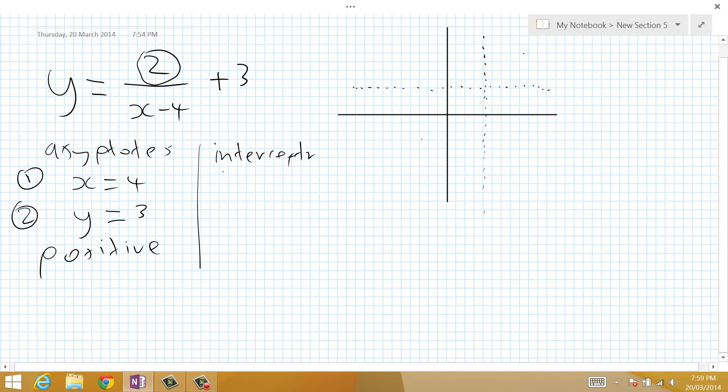When we set x equal to 0, we end up with y equals 2 over negative 4 plus 3. y equals negative 1 half plus 3. y equals 2 and a half. So it's going to go through our y-axis roughly there.